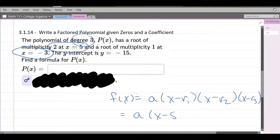So x equals 5, remember, x equals 5 corresponds to x minus 5 as a factor. So that's what I'm doing here, x equals 5 corresponds to x minus 5. Multiplicity is 2, so we're multiplying it twice.